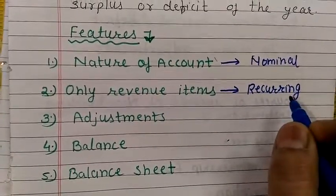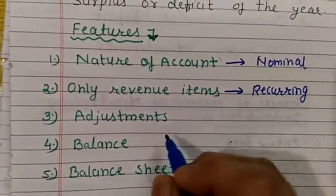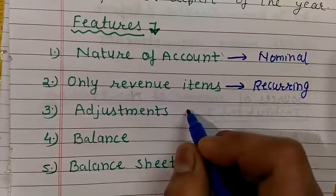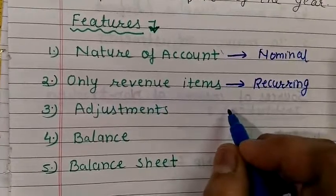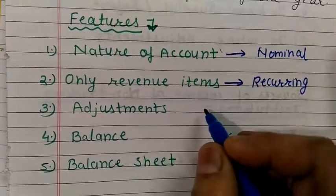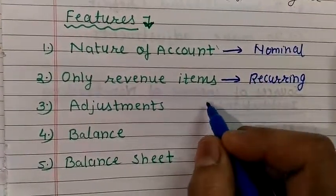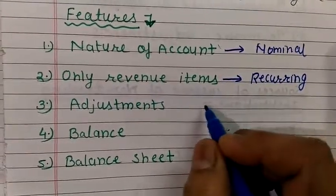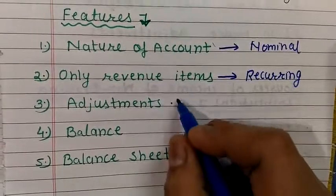Non-recurring type of items are not written in this account. Then adjustments: different types of adjustments like outstanding, prepaid, unearned, accrued, etc. are written in this account. Incomes which are accrued means not received during the year but related to the year. Unearned income means advance received income. These all are adjusted in this account.